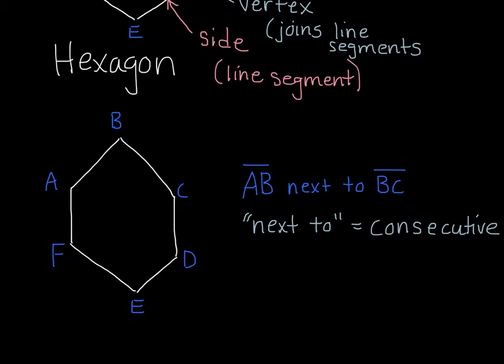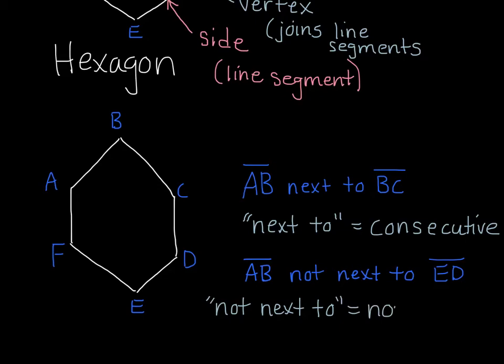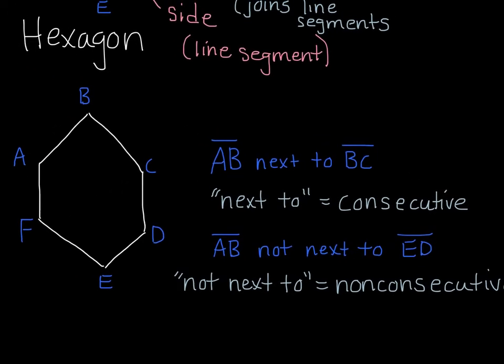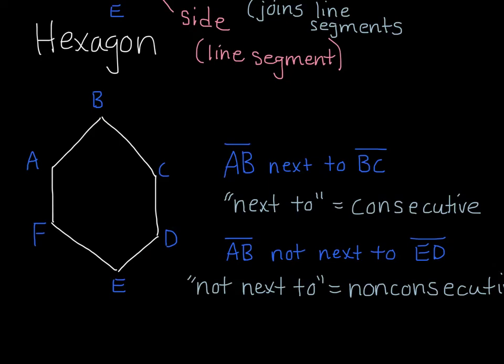Now we contrast that by saying, what about segment AB is not next to, not touching, say ED. Those two are connected through the polygon, but they don't touch each other directly. I'd have to go through another side to connect these two lines. So we're going to say not next to, or not touching, we're going to call those non-consecutive sides. So I could say, for this example here, AB is not consecutive to DE, or FE, or EF, or DC, or CD. It is consecutive to AF or BC.